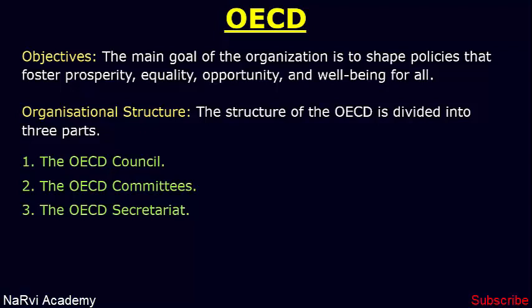The OECD Council is the organization's decision-making body. It is composed of ambassadors from member countries and the European Commission, and it is chaired by the Secretary General of the OECD. It meets regularly to discuss key work of the organization, share concerns, and take decisions by consensus.